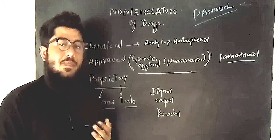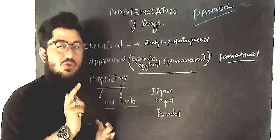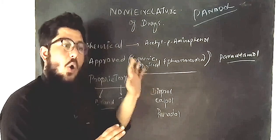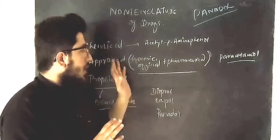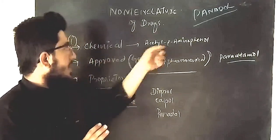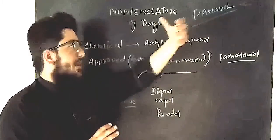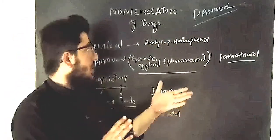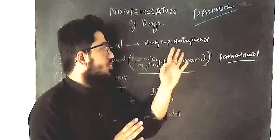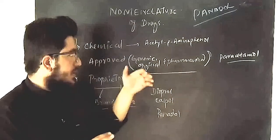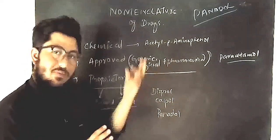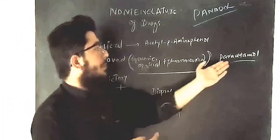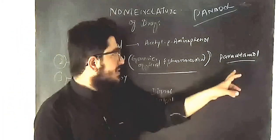So to summarize: the approved name is also called the pharmaceutical name, official name, and generic name. For Panadol, the chemical name is acetyl p-aminophenol, and the generic name — given after the discovery of the chemical name — is paracetamol.